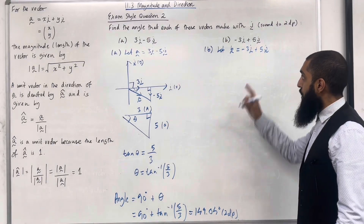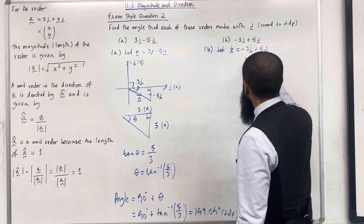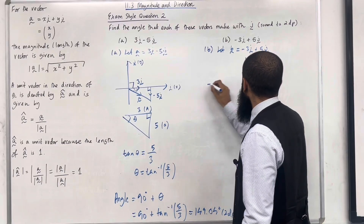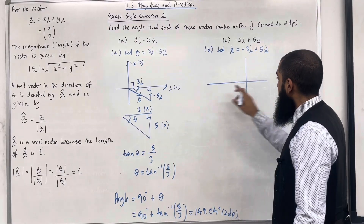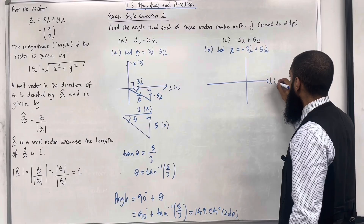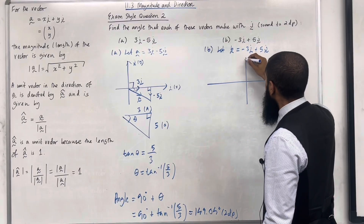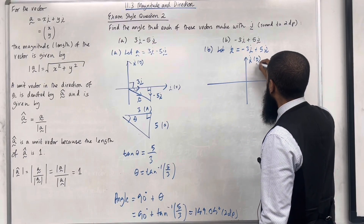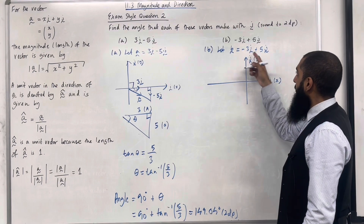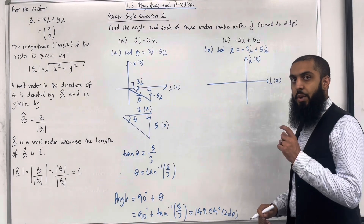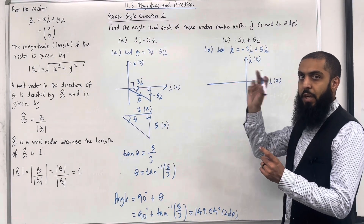The horizontal axis represents i (the x-axis) and the vertical axis represents j (the y-axis). The vector −3i + 5j is three units to the left and five units going up. The vector looks like this.